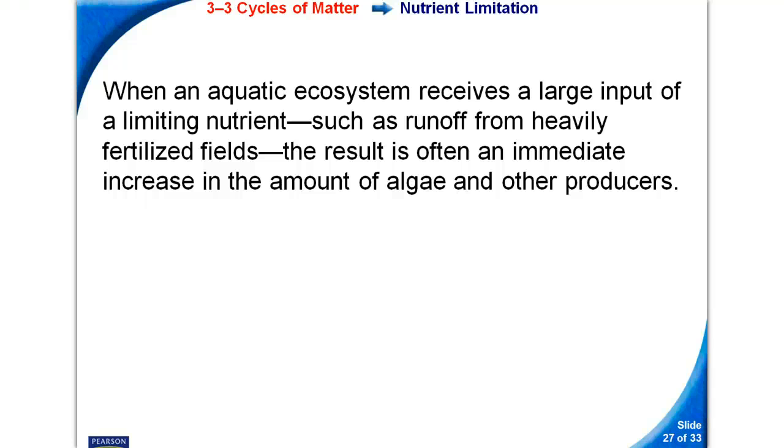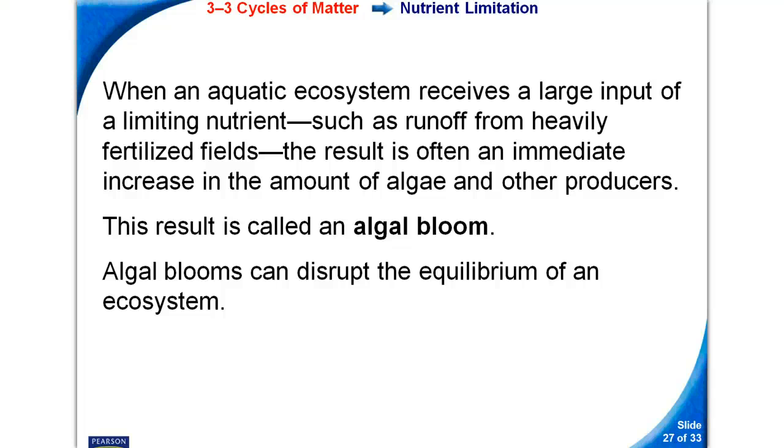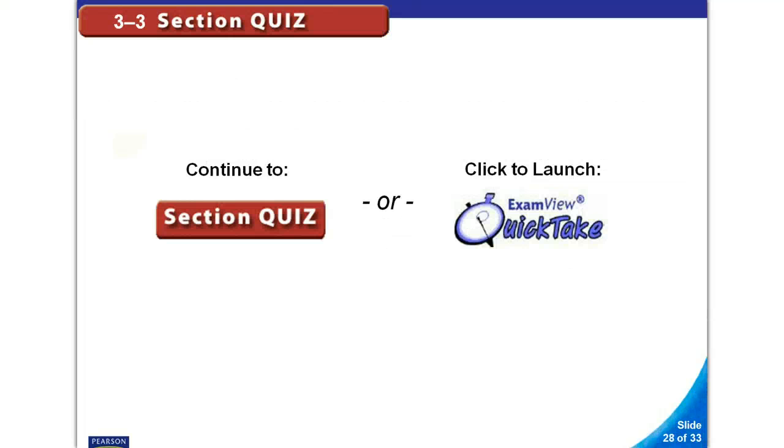When an aquatic ecosystem receives a large input of a limiting nutrient such as runoff from heavily fertilized fields, the result is often an immediate increase in the amount of algae and other producers. The result is called an algal bloom. Algal blooms can disrupt the equilibrium of an ecosystem.